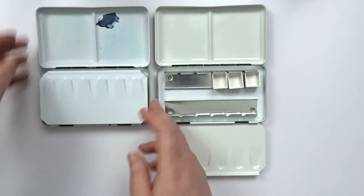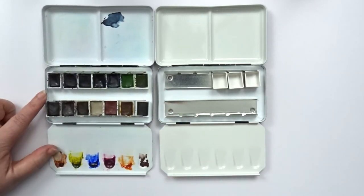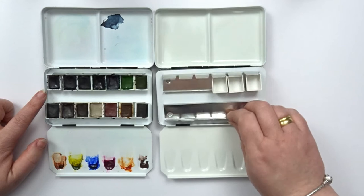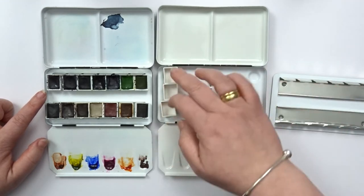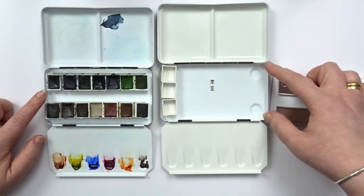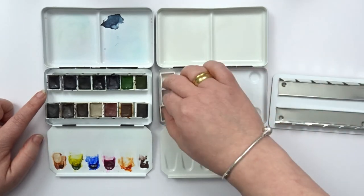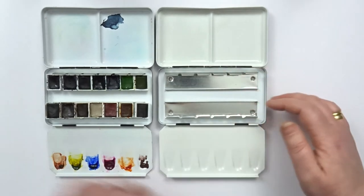Now when you look at my watercolor tin you see that it can easily hold 14 halfpans and if you even want more in there you can take out this part that is holding the pans and then you can make 3 rows of 7 halfpans so if you want to you can store up to 21 of them.